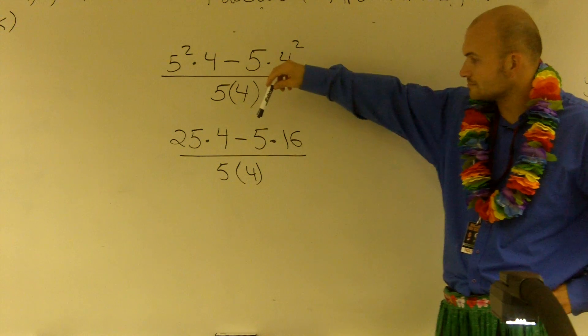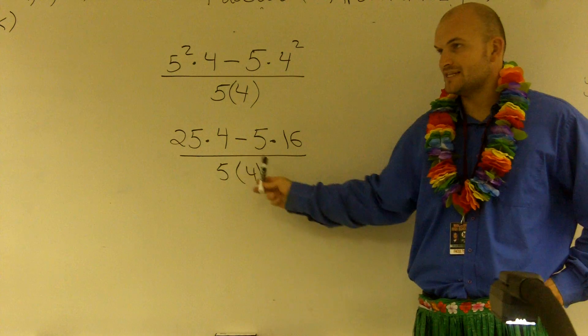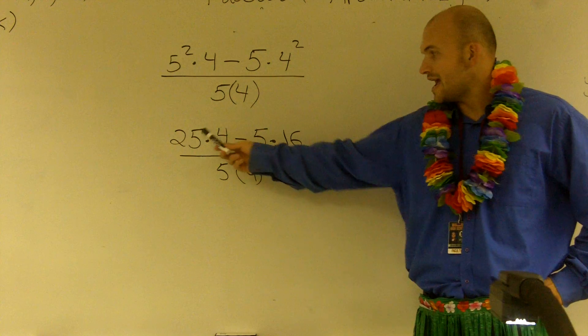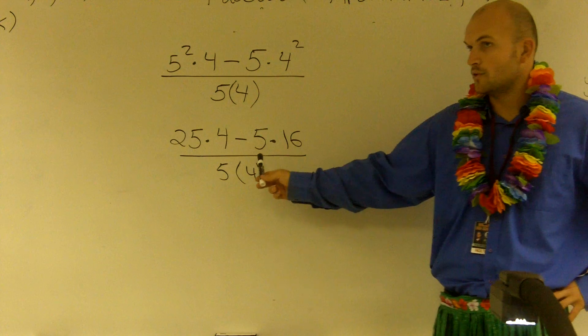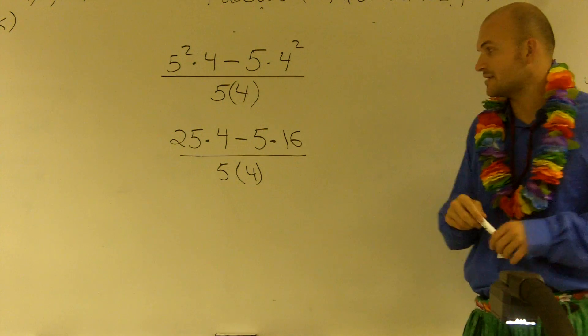You got to remember, this whole top is being divided by 5 times 4. Every single one of these numbers is being divided. So before we can actually divide it out, we need to simplify it.